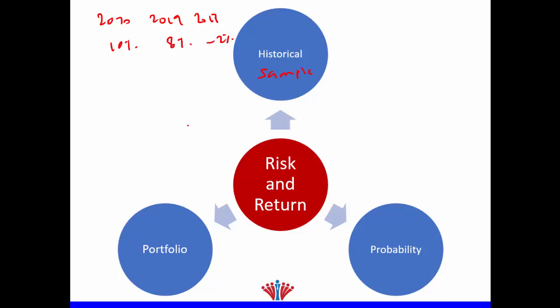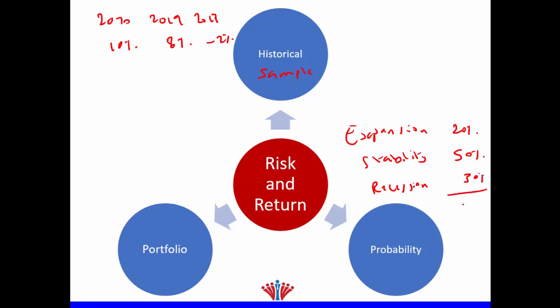The second type is called probability. Probability means we look at the future — we try to predict what will happen. In reality, nobody knows what will happen in the future, so to predict what will happen next year, we ask people about the status of the economy: will there be expansion, stability, or recession? They might tell us the expansion probability is 20%, stability is 50%, and recession is 30%. The total of the probabilities must always be 100%.